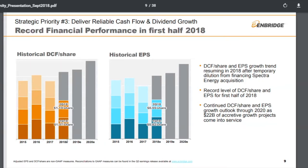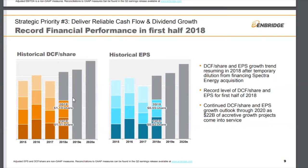Going forward, it looks like distributable cash flow per share is going to resume growth. But achievement of these per-share growth metrics is tougher to do when your share count is constantly being diluted.